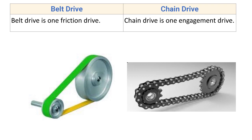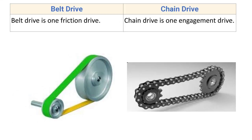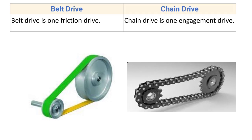Chain drive, on the other hand, is an engagement drive. As seen in the chain and sprocket arrangement, it is a flexible engagement drive where motion is transmitted from one shaft to another through successive engagement and disengagement of the chain with the sprocket. There is negligible friction between the chain and sprocket, whereas in belt drive motion is transmitted due to friction only.